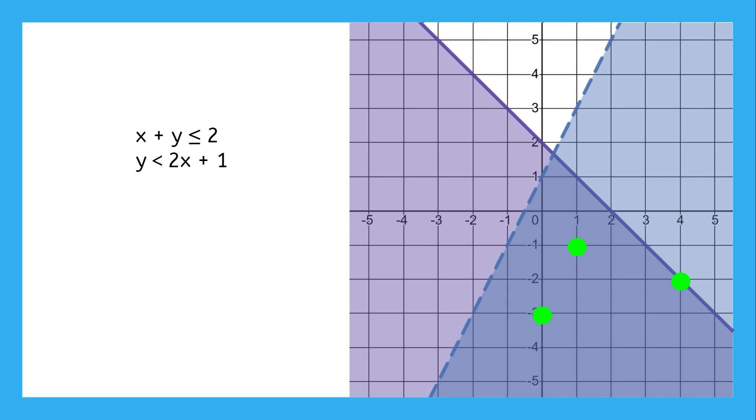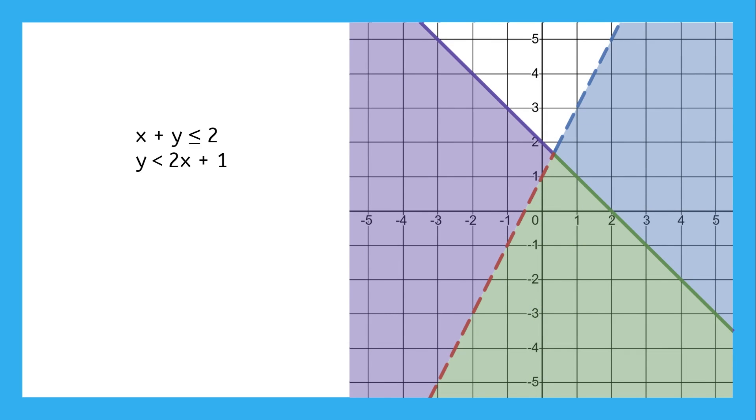We just have to be careful, because points on the dashed line are not solutions. So really, our solution area will look like this, where the entire green area is full of solutions, not including the dashed line.